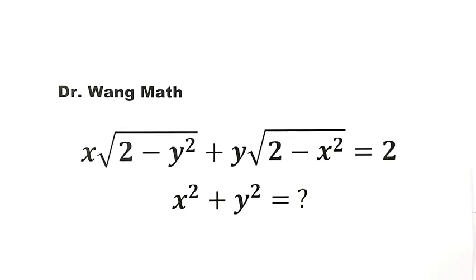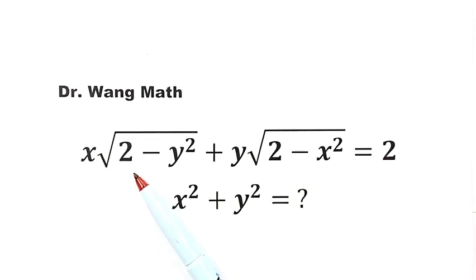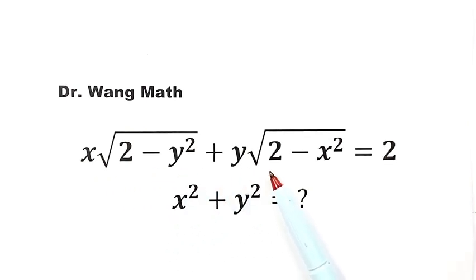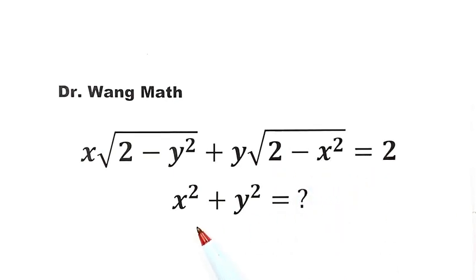In this video, we're going to solve this question. Given the equation x times square root of (2 minus y squared) plus y times square root of (2 minus x squared) equals 2, then what is x squared plus y squared?